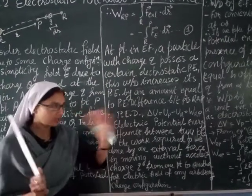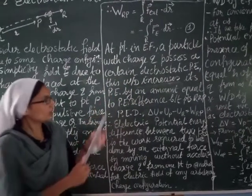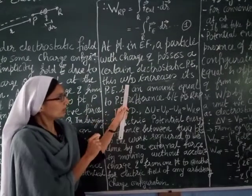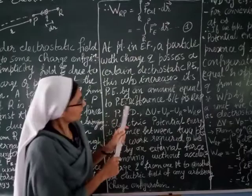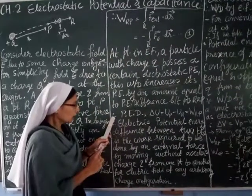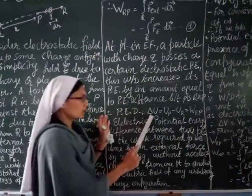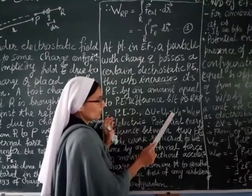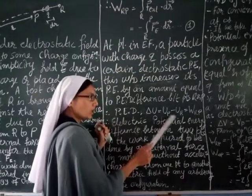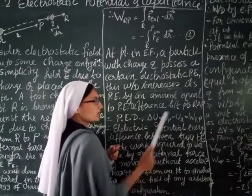Potential energy exists at every point in an electric field, but when you bring a charge from infinity — or from another place — into the electric field, work is done and therefore it will be stored as potential energy. The work done equals the change in potential energy, that is the potential energy difference between points P and R: delta U = U_P − U_R = W_RP.